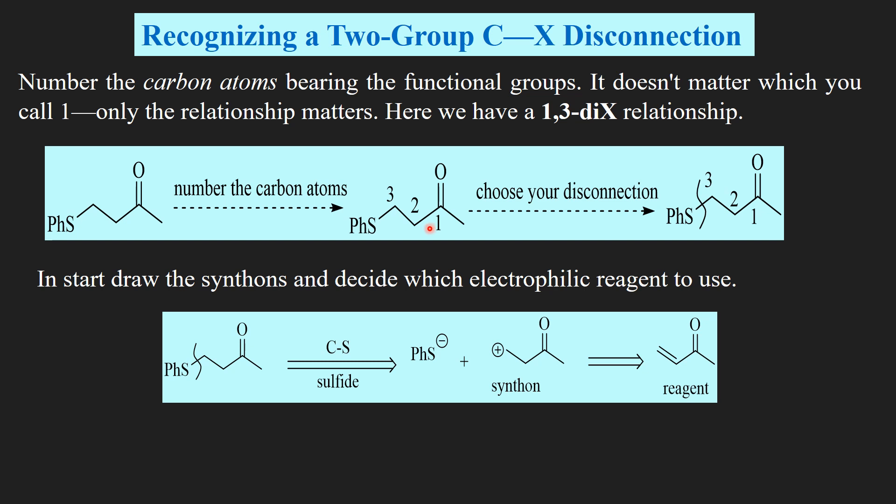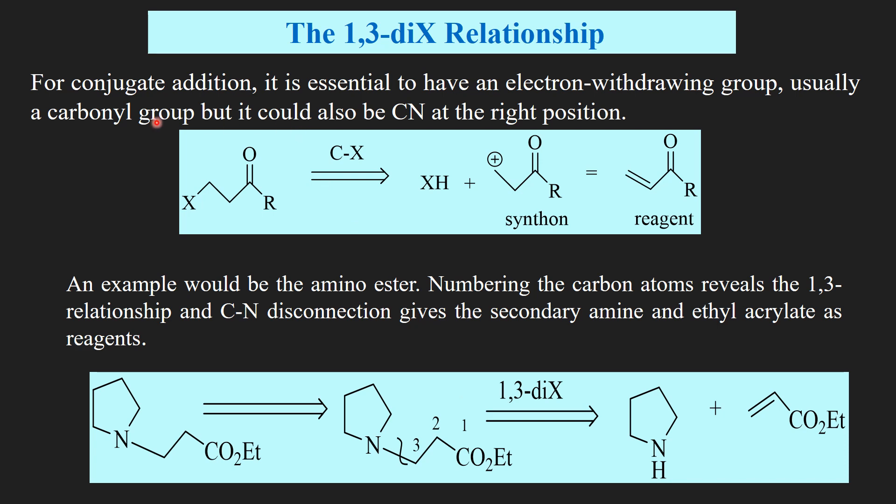We can choose conjugate addition as our reaction and do the disconnection as we have already done. In start, draw the synthone and decide which electrophile reagent to be used. 1,3-di-X relationship: for conjugate addition, it is essential to have an electron-withdrawing group as here, and it is usually a carbonyl group, but it can also be cyanide at the right position. The nucleophilic reagent will depend upon the heteroatom. If X is oxygen or sulfur, we need a base, but if X is nitrogen, the amine itself should be nucleophilic enough to do the conjugate addition.